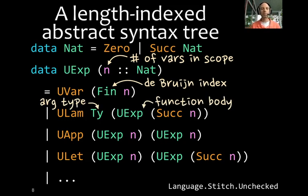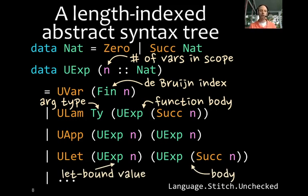Here, we have a lambda abstraction. So we're going to need the type of the argument. Again, we don't need a name for the argument, because we're just using these de Bruijn indexes. And then we have the function body. The interesting thing about the function body is, of course, one more variable is in scope. So this is indexed by suc of n, not just n. There's one more variable. Applications are straightforward. We have an application of a function to an argument. They both have the same number of variables. In a let expression, we have the let bound value. But then there's the body. This is the part after the n. And that also has one more variable in scope. So we see the suc appear there.